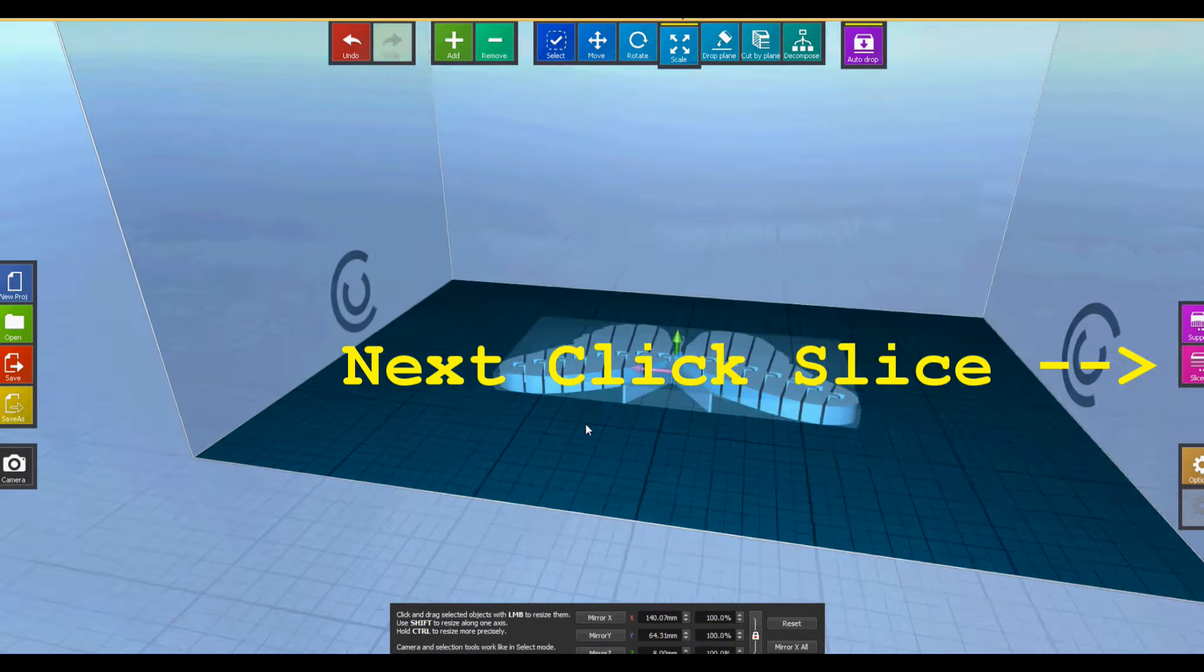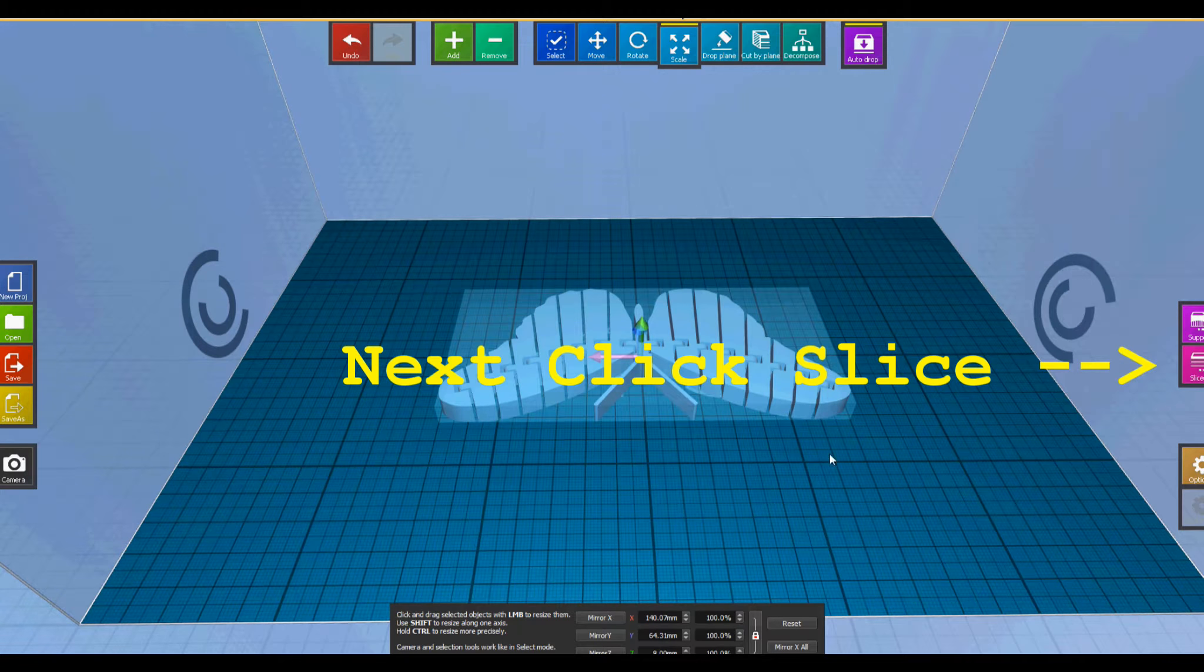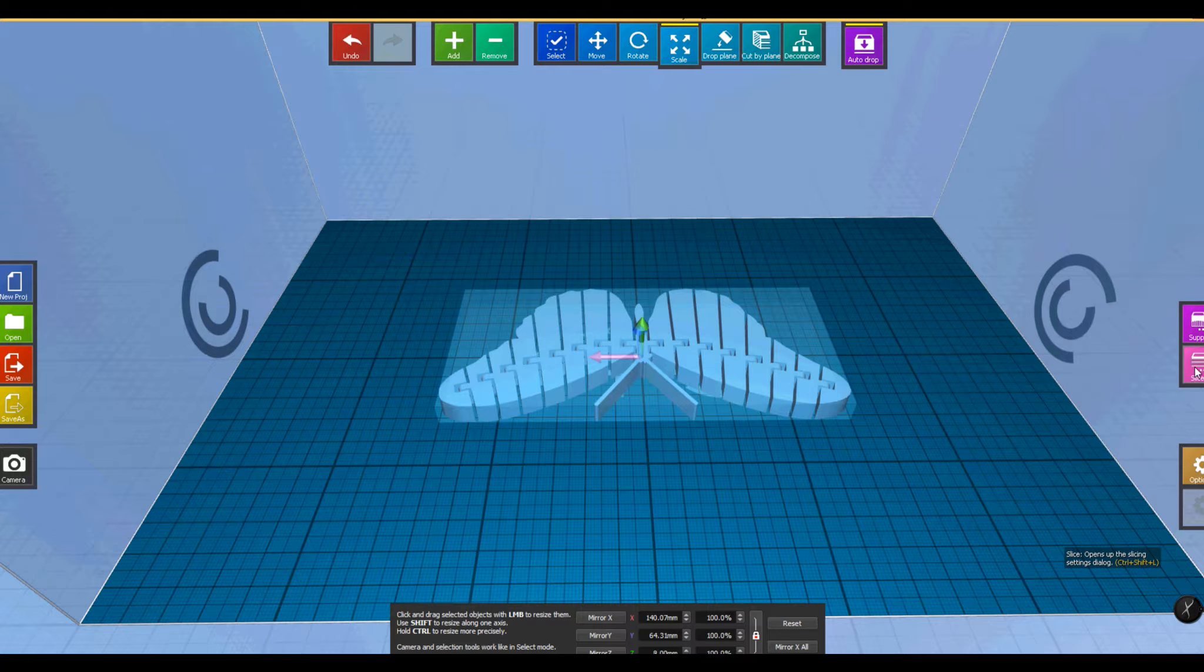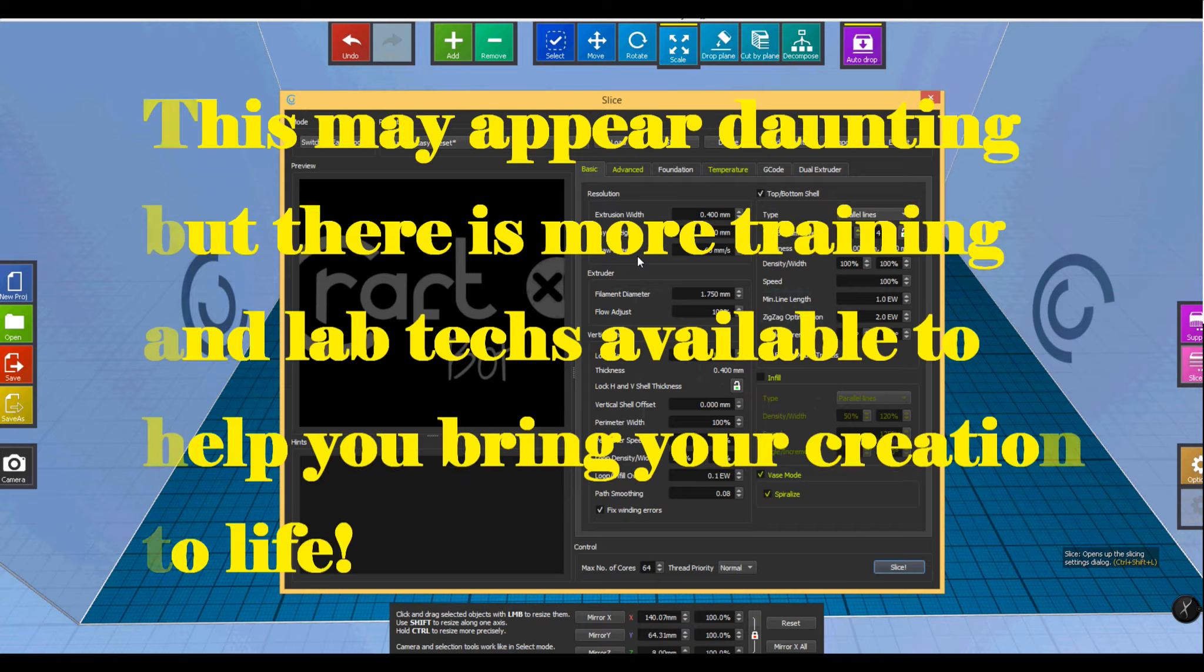Once your part is inserted, click the slice tool to open up the slicing menu. This menu is very complex and has many settings, but there is follow-on training available to learn more about it.